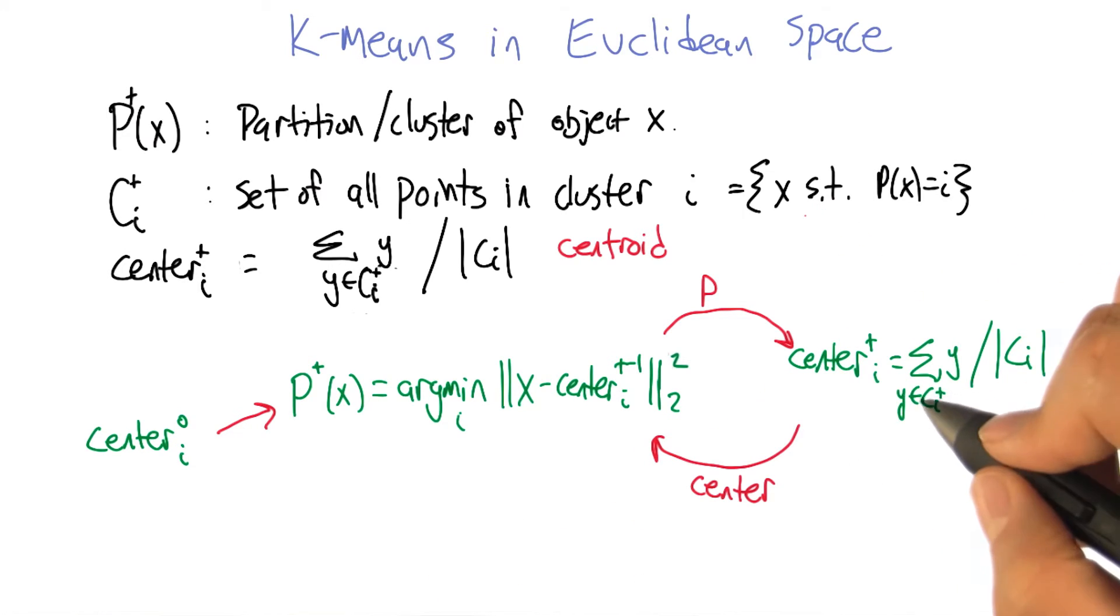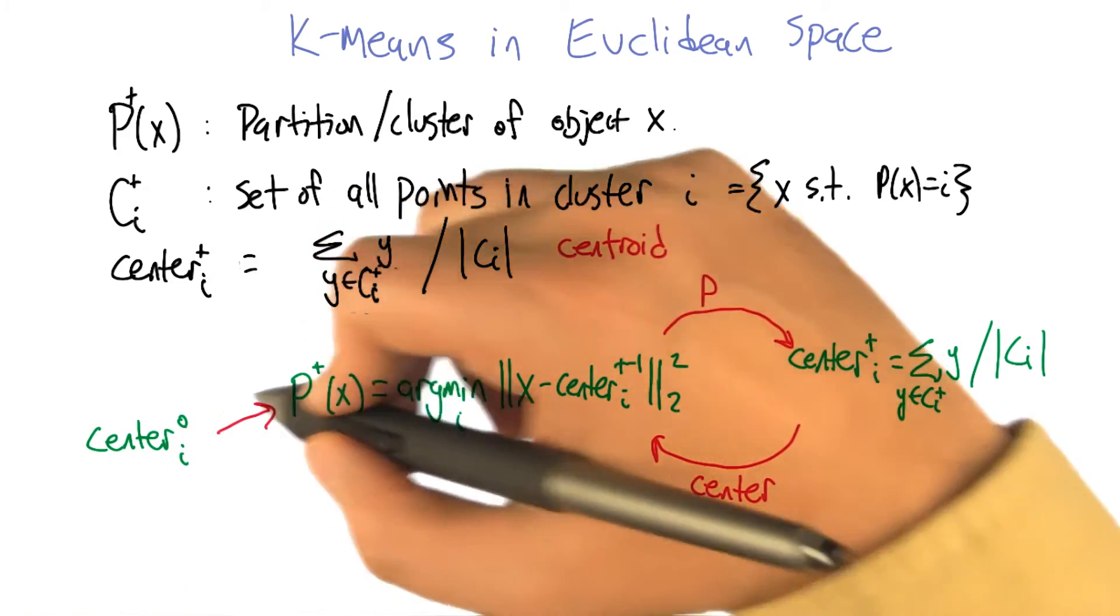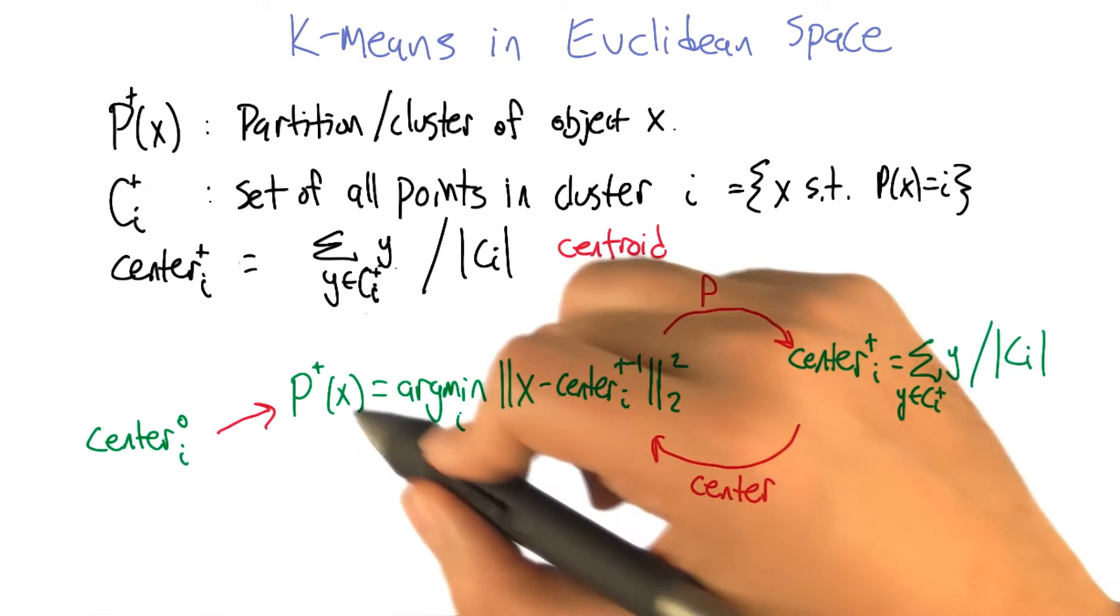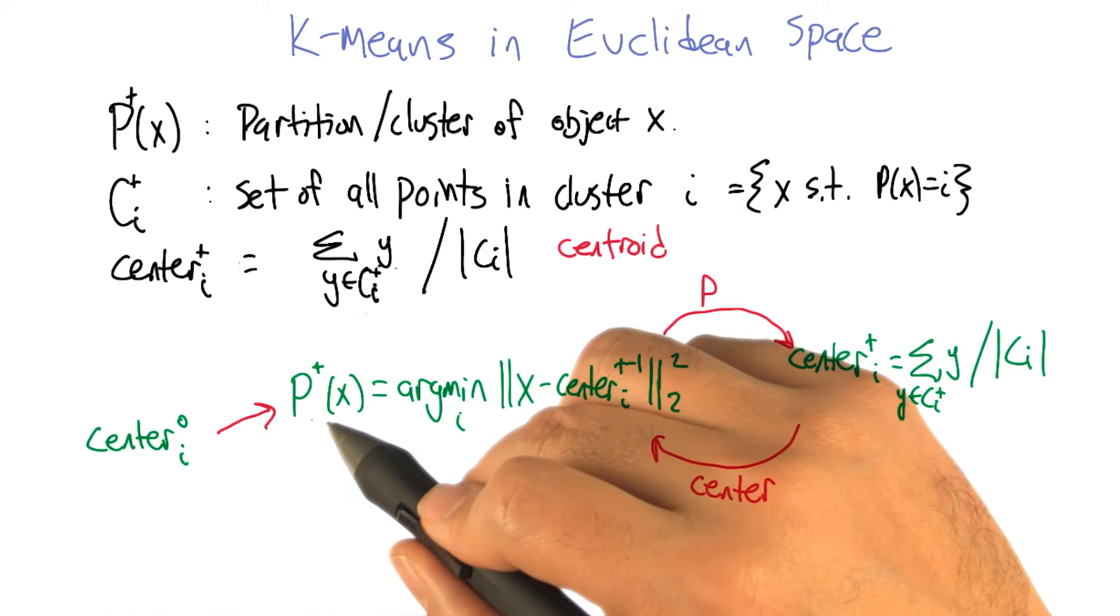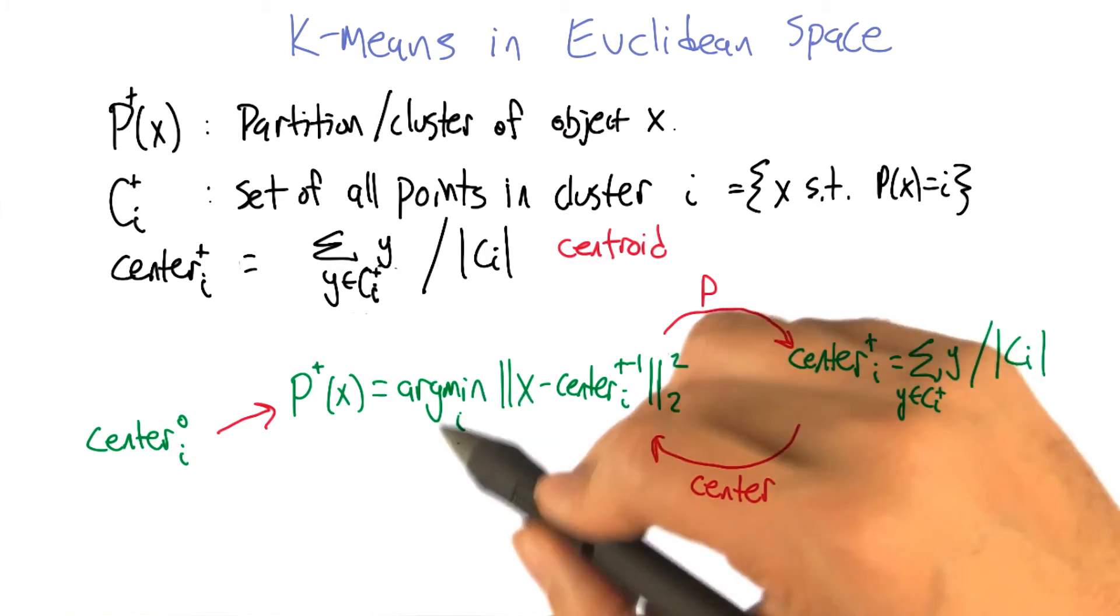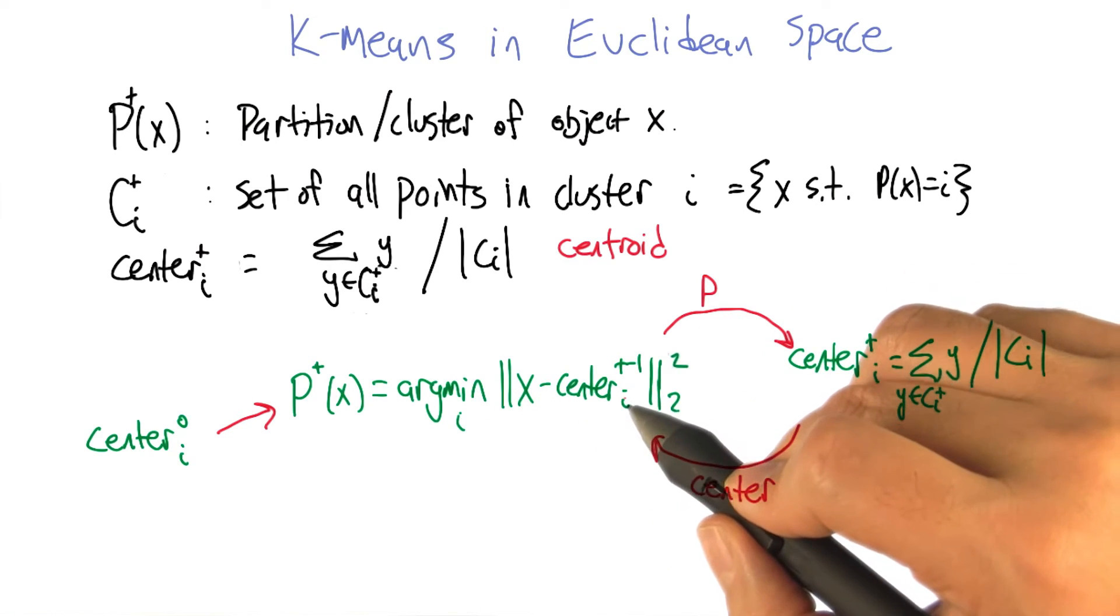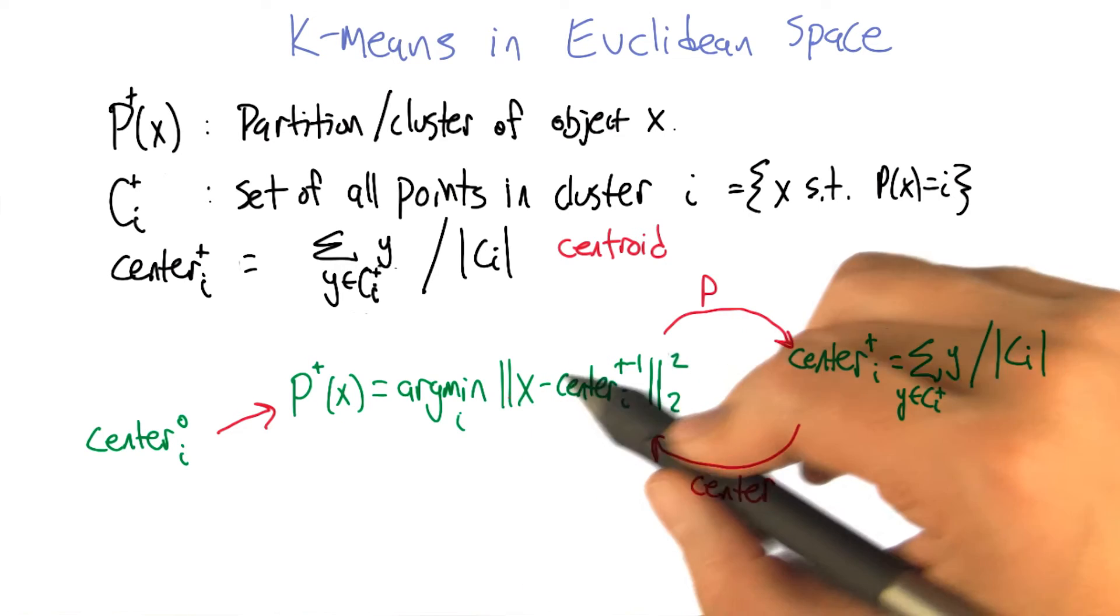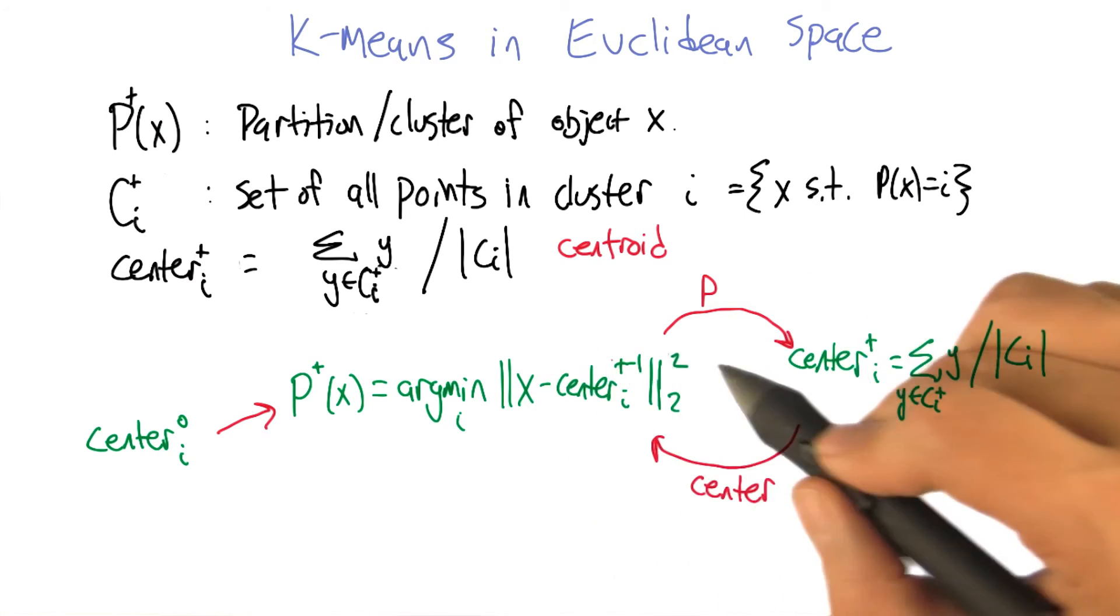Here's an equation version of the algorithm. We start by picking centers for iteration 0, then hand it to a process that assigns the partitions. The partition of point x is the argmin over all clusters of the distance between x and the center of that cluster—just assigning each point to its closest center. Those bars with sub-2 mean Euclidean distance.